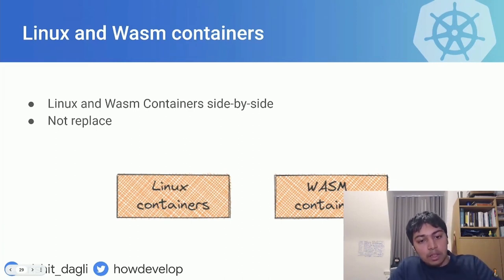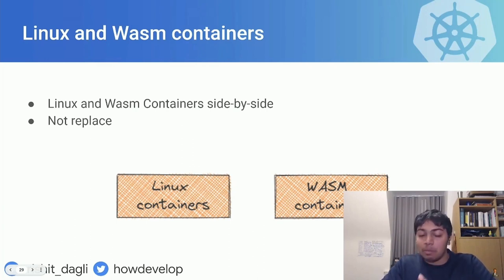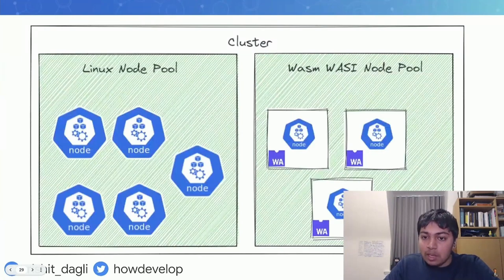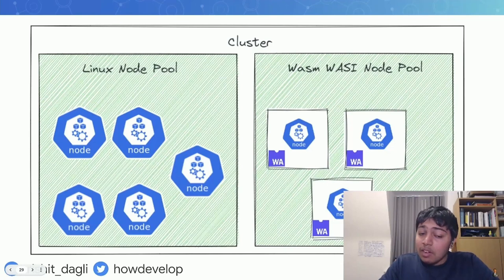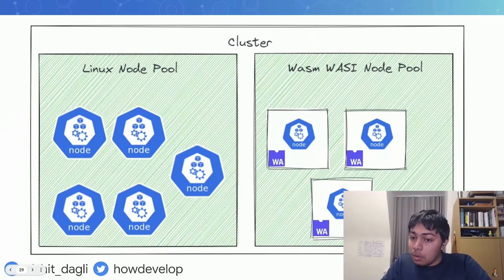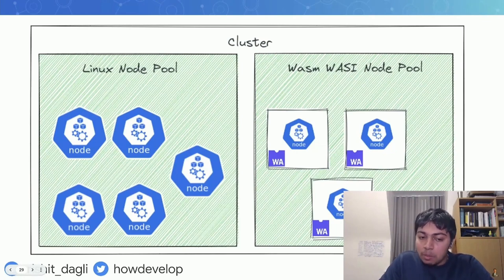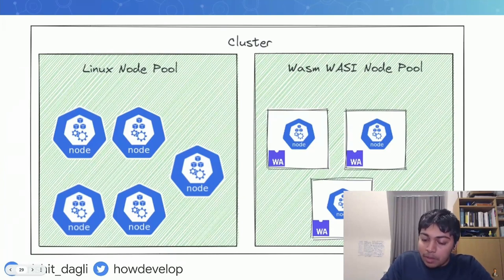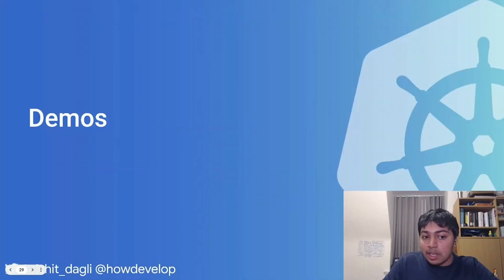The key takeaway is that we are trying to have Linux and WASM containers side by side — not replacing Linux containers. Ideally, you'd have a Linux node pool and a WASM node pool running together. Compute-intensive requests would be handled by the WASM node pool, and the rest handled by the Linux node pool. WASM should not replace Linux containers altogether — just run them side by side.